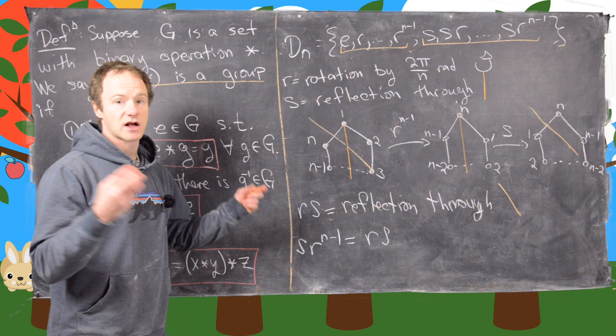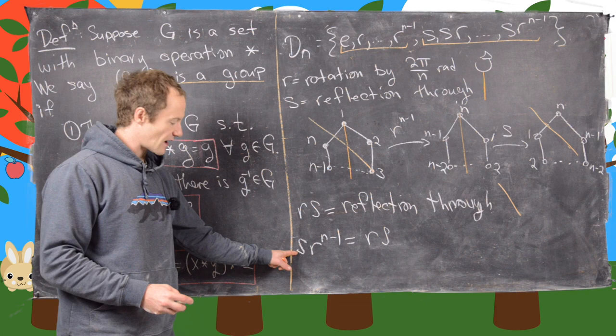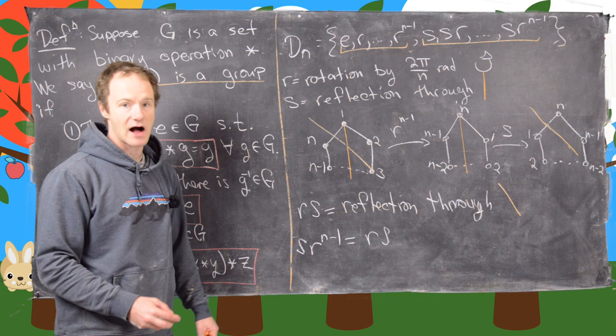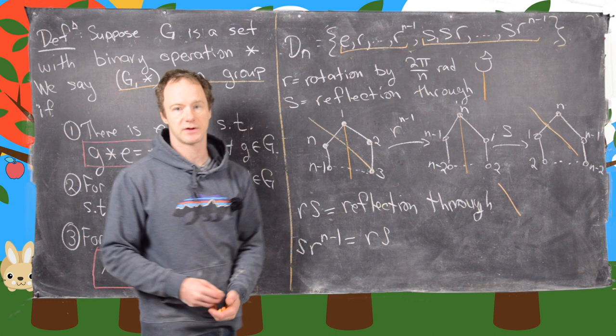So we have a commutation rule: r·s equals s·r to the n minus 1. Generally we want to write s's on the left, so whenever we see an s on the right of an r, we can switch them at the cost of raising r to the n minus 1 power.